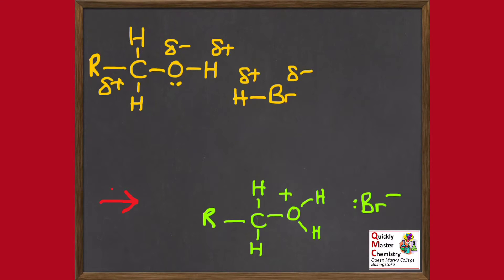First, bonds — covalent bonds either disappearing, where there was a bond breaking, or appearing where there wasn't a bond forming. If we compare these reactants and products, we can see there's a bond between the hydrogen and the bromine in hydrogen bromide in the reactants, but by the time we get to the products that bond has gone — so we're going to break the H–Br bond. With the organic molecule, the oxygen initially was bonded to one hydrogen, but by the products there's a second hydrogen bonded to it, so we're also going to form a new covalent bond between the oxygen and that hydrogen from the hydrogen bromide molecule.